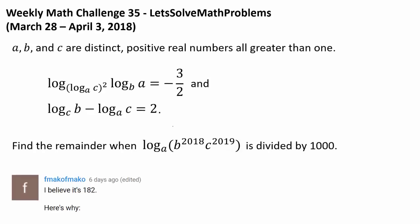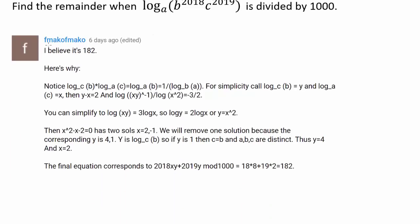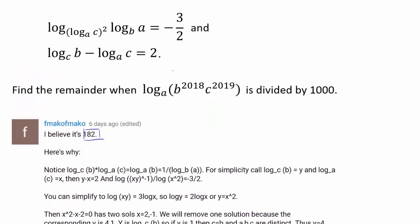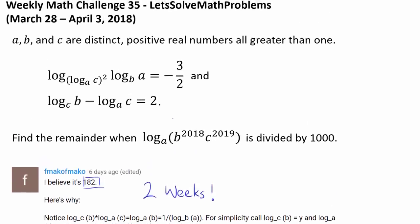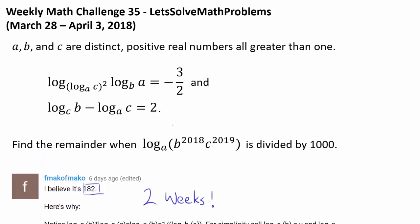Before I go on, I want to recognize Fmako Fmako, who was the very first person to correctly answer this weekly math challenge with the answer of 182. Fmako Fmako got first place, the very first person to answer the challenge 2 weeks in a row — I don't think this has ever happened before. Congratulations. Anyway, we are going to endeavor to obtain 182 as well.